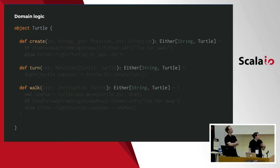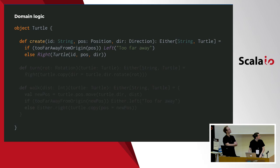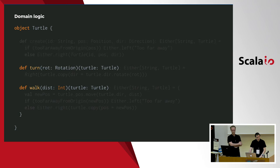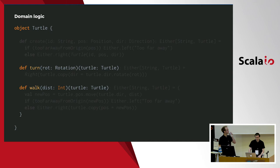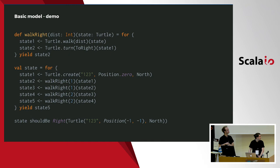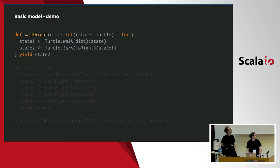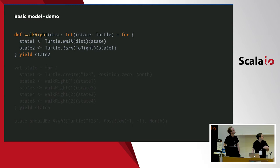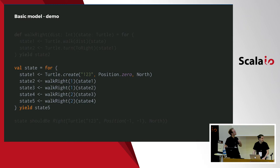Commands can have some validation, so they can return either an error or the new state. For instance for creation we just check that the position is not too far away. If you look at the signature, we use currying because it allows us to create already-configured commands that we can reuse — and it will be nicer later. Let's look at a simple program using this model: we start with a function which calls two commands — walk, then turn — and use it alongside other standard commands.